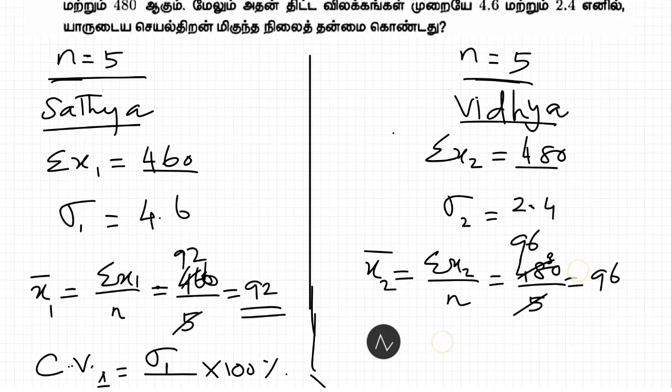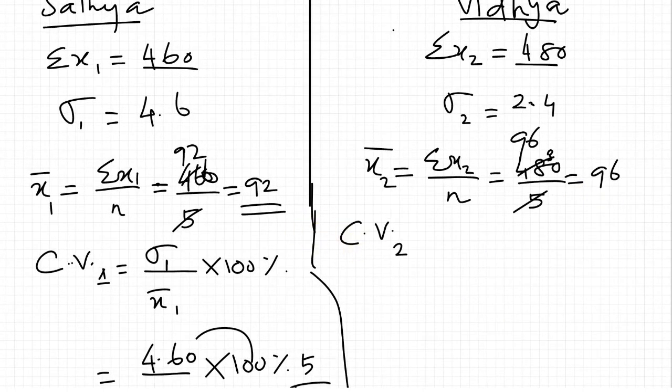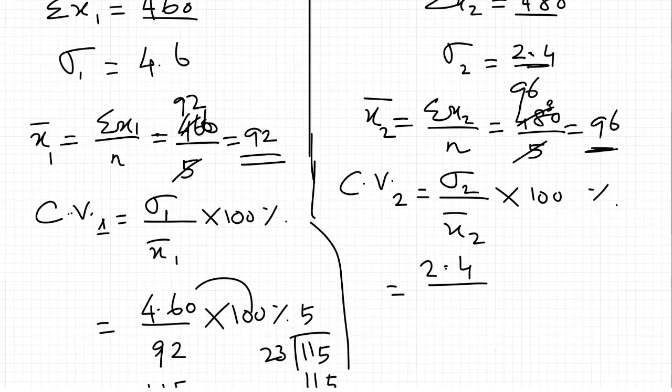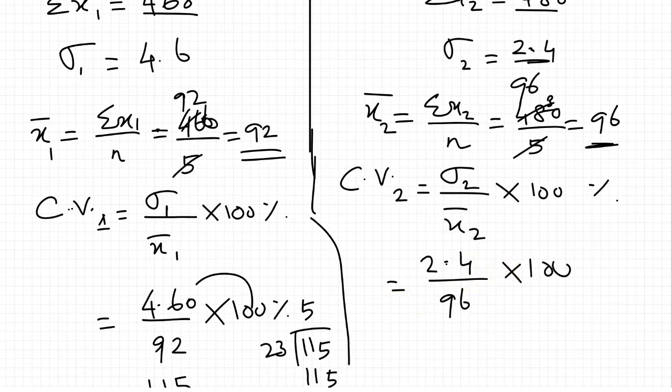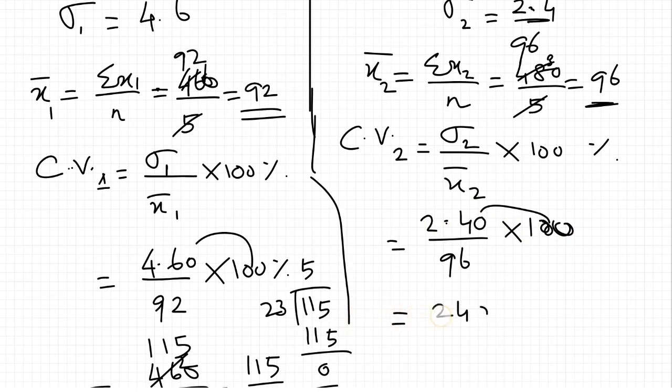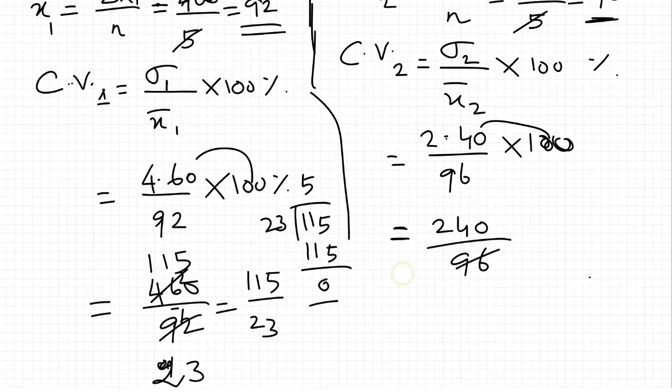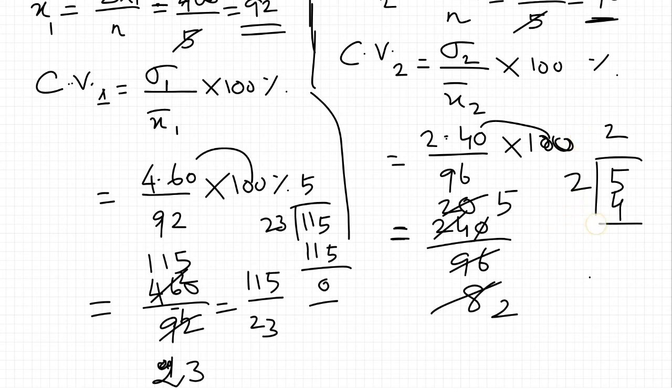Coefficient of variation 2, standard deviation 2 by x bar 2 into 100%, that is equal to 2.4 by 96 into 100. So 2.40 by 96. Working through the division, 240 divided by 96. That gives us 2.5%.